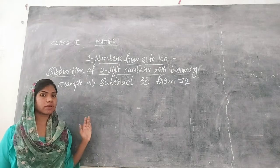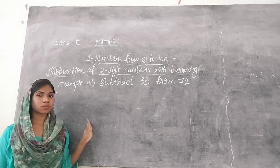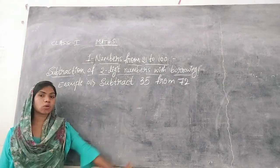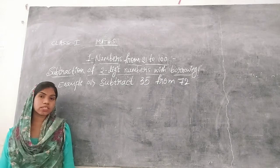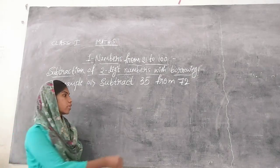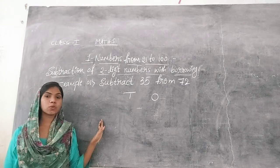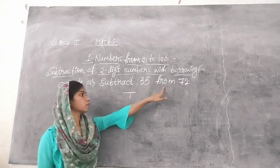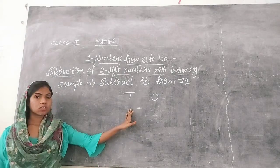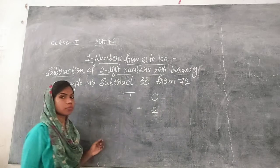First, write the given numbers in their respective columns. Columns mean we write the numbers in their respective places. We have 35 and 72 — both are two-digit numbers, so we have two columns: ones and tens. In subtraction, always write the bigger number first. 72 is the bigger number, so 2 comes in the ones place and 7 comes in the tens place.